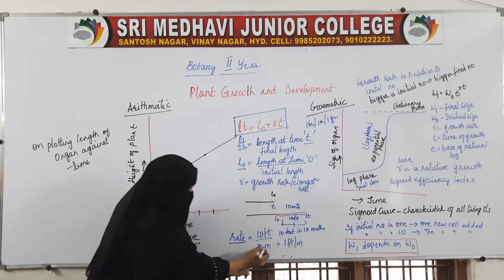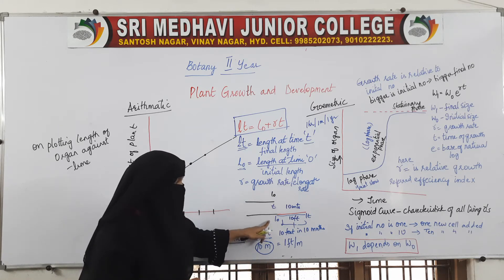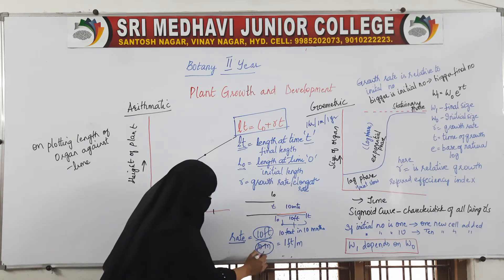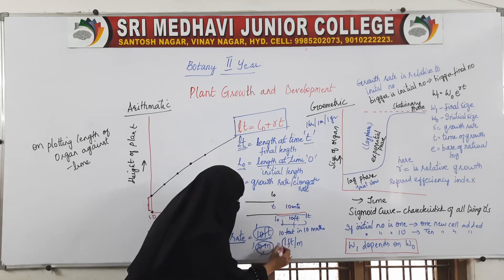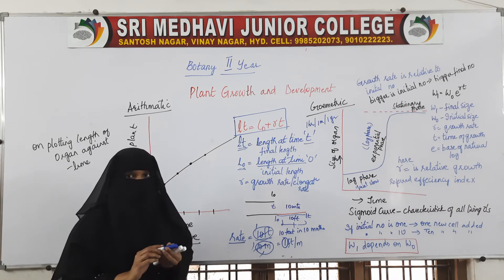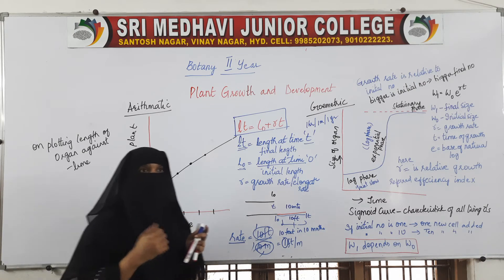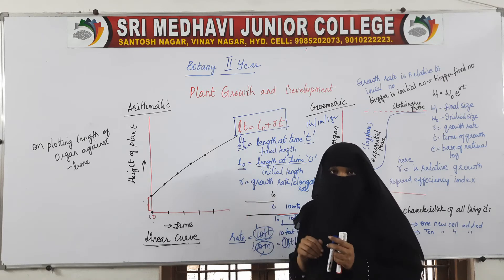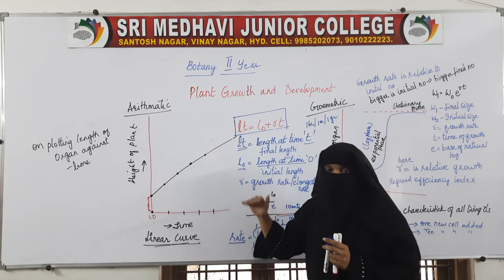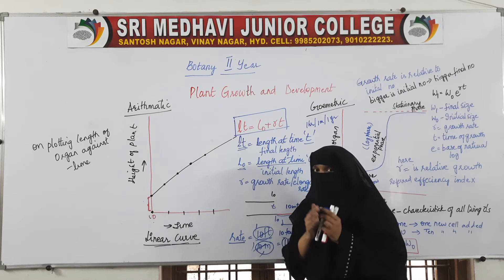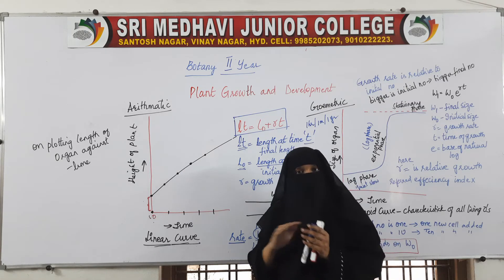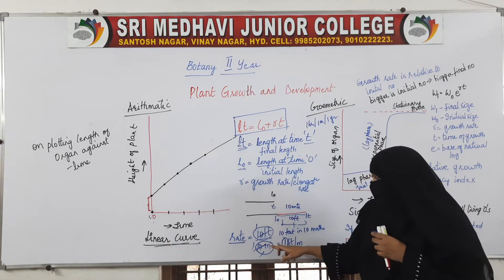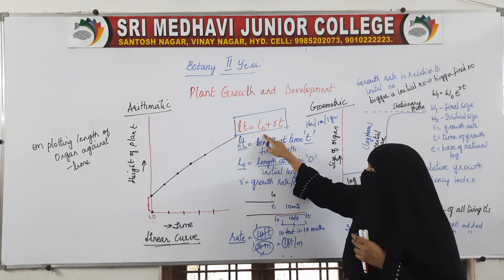In 10 months, the plant showed 10 feet of growth, so every month it showed an increase of 1 foot. 1st month: 1 foot. 2nd month: 2 feet. 3rd month: 3 feet. This is constant and regular because each division gives one meristematic and one permanent cell. So the curve in arithmetic growth rate is a linear curve, and the formula is Lt = Lo + Rt.